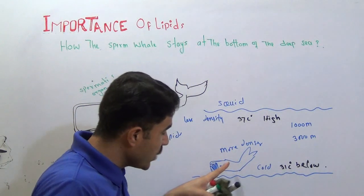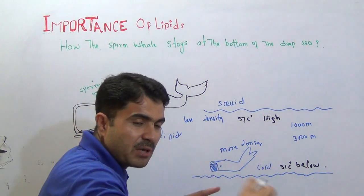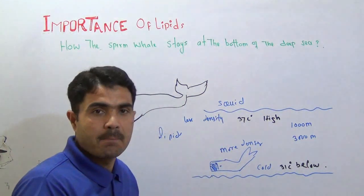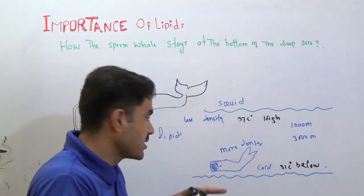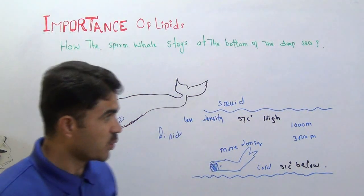And in this way, the density of the whale and the bottom water become matching. And now, now it can stay here. Because now the water will not propel it, will not propel it to the surface. And it can easily get its food, the squid.